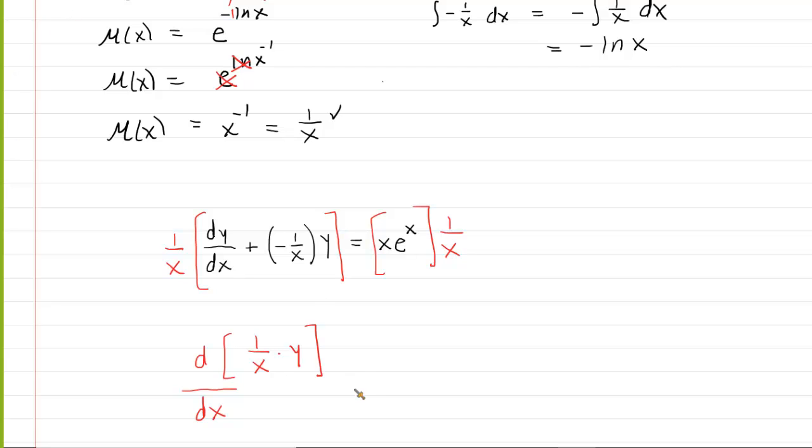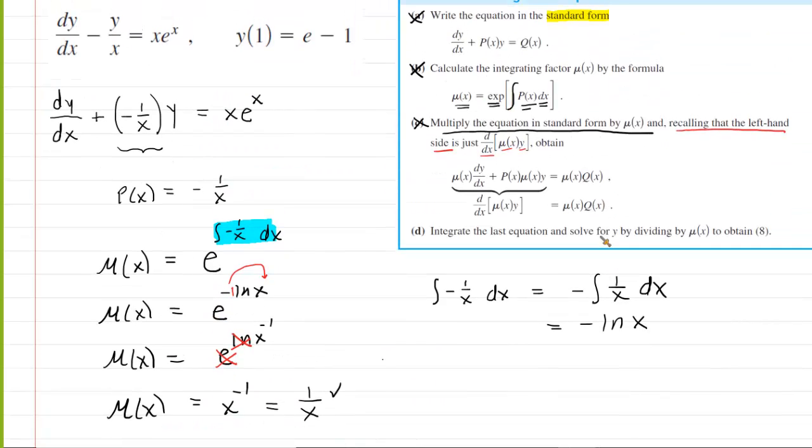So it does indeed work. On the right-hand side of the equation, we can see that this x and that x, one being in the numerator, the other in the denominator, will cancel out. This will just give us e to the x on the right-hand side. Then the next step says to integrate that last equation and solve for y.